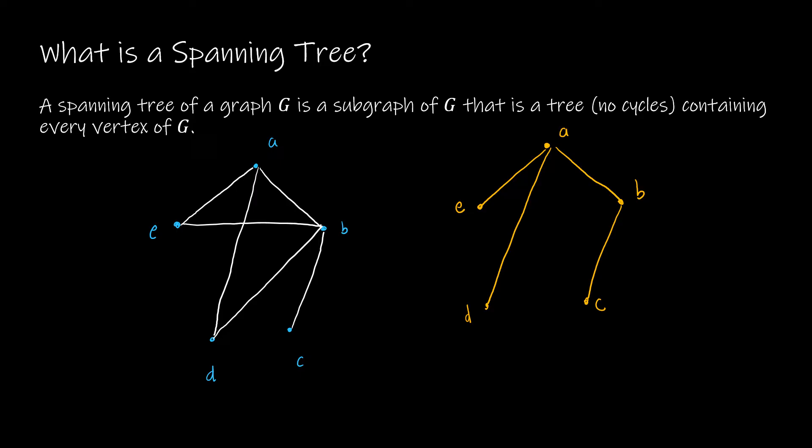One method for creating a spanning tree is to simply identify anywhere that you have a circuit, where there's more than one way to get to one vertex, and simply remove those edges. And so essentially, that's what I've done here, is I've created a spanning tree by getting rid of any circuits.